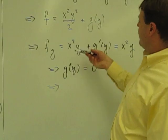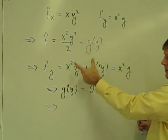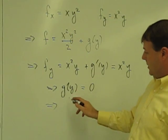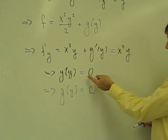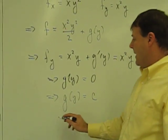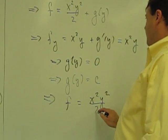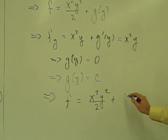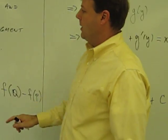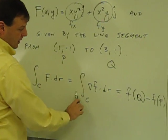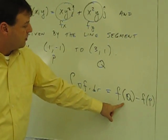Now I can find out what G of Y is. Remember, my first guess was that F equals X squared Y squared over 2 plus G of Y, so I want to find out what G of Y is. Since G prime of Y equals zero, G of Y is equal to a constant. That tells me that F is equal to X squared Y squared over 2 plus a constant. So that's the F that I'm looking for.